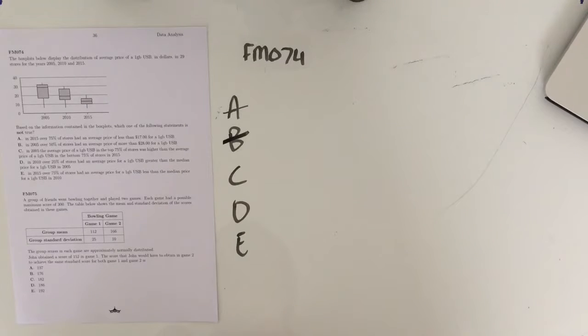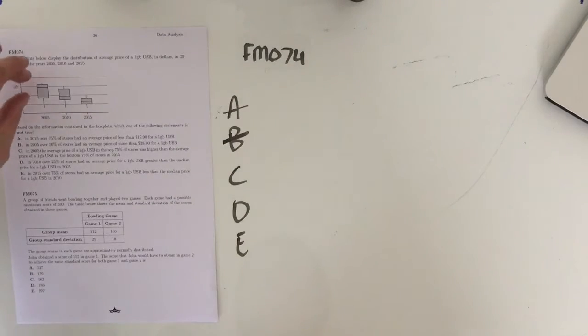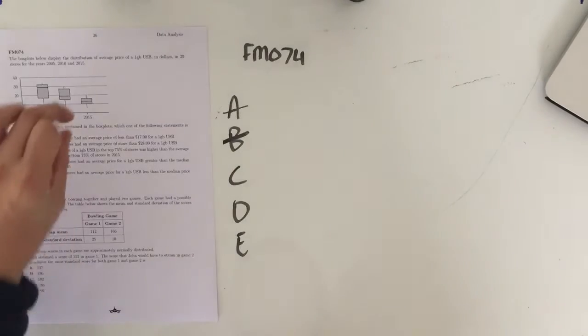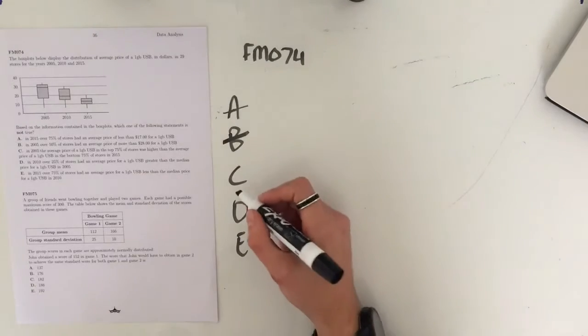Part C says, in 2005, the average price of a 1GB USB in the top 75% of stores was higher than the price of a 1GB USB in the bottom 75% of stores in 2015. So this is true, we have our top 75% is not overlapping with our bottom 75%. So our top 75% of 2005 does not overlap with the bottom 75% of 2015. So 75% of stores had higher price points back then than the bottom 75%. So once again, this statement is true.